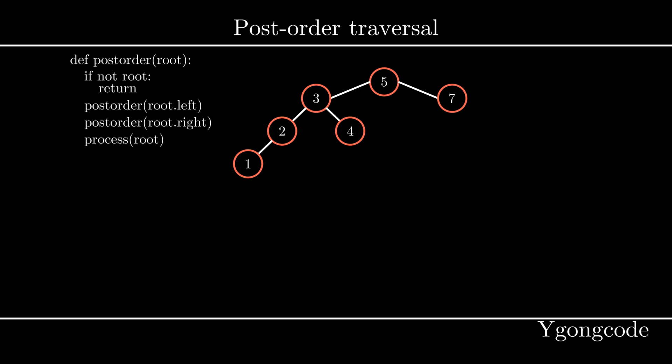Here's the code for the post-order traversal. Notice the process method is placed after the left and right recursive calls. This ensures that the entire left subtree and right subtree has been traversed before we process the current node. For our process function, we're going to append the value of the node to the end of a list.